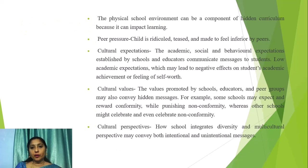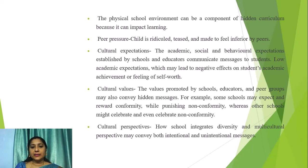The physical school environment can be a component of hidden curriculum because it can impact learning. Peer pressure, where a child is ridiculed, teased and made to feel inferior by peers, is one example. Cultural expectations: the academic, social and behavioral expectations established by schools and educators communicate messages to students. Low academic expectations may lead to negative effects on students' academic achievement or feeling of self-worth. Cultural values: the values promoted by schools, educators and peer groups may also convey hidden messages. For example, some schools may reward conformity while punishing non-conformity, whereas other schools might celebrate non-conformity.